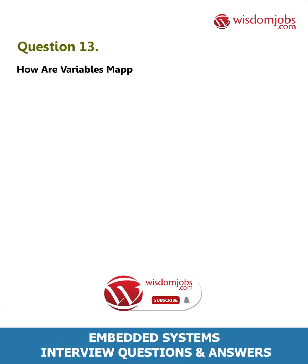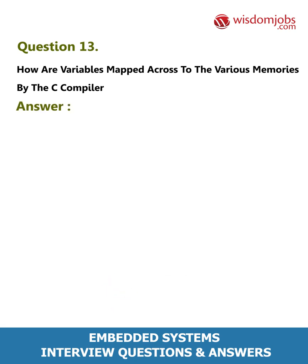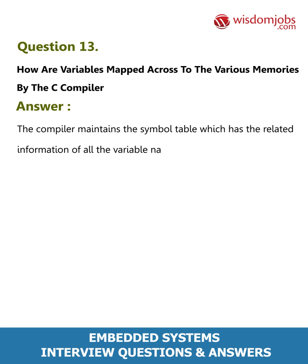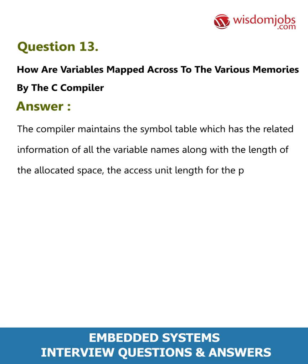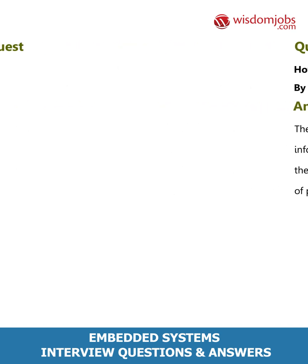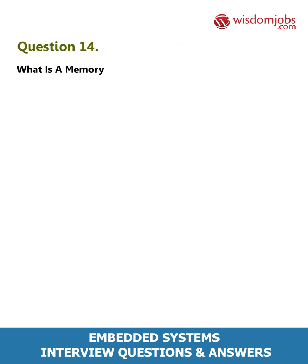Question 13: How are variables mapped to various memories by the C compiler? Answer: The compiler maintains a symbol table containing information about all variable names, along with the length of allocated space, the access unit length, the pointer type, and the starting address of the memory space.